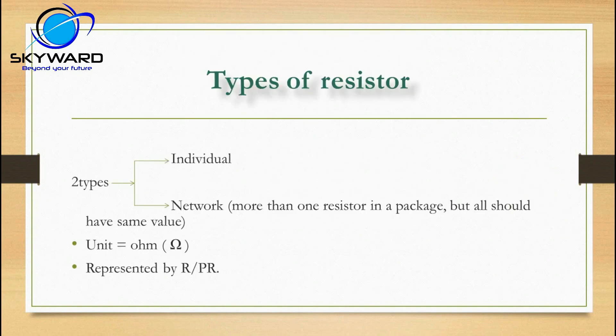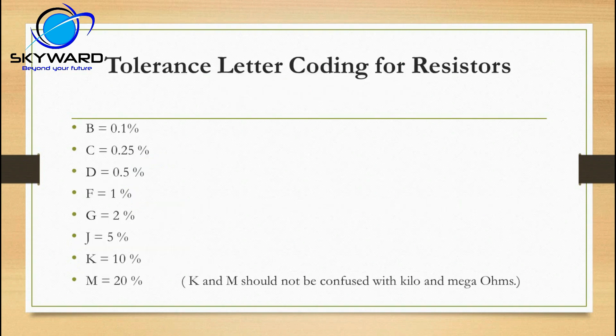In a laptop motherboard you will find two types of resistors. One is called an individual resistor, and another one is called a network resistor. Network means more than one resistor packed in one package. The unit is ohm, as mentioned, and it is represented by R or PR.